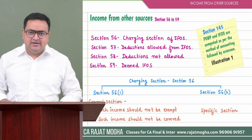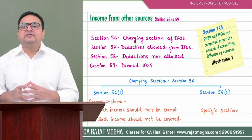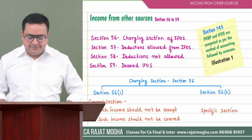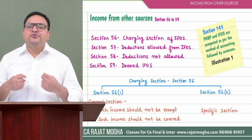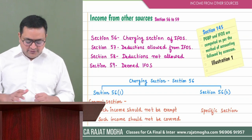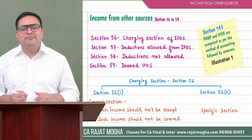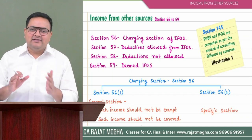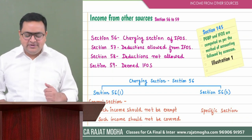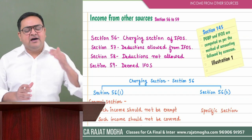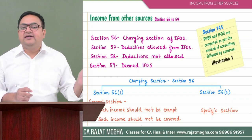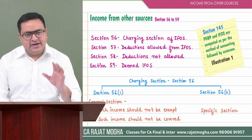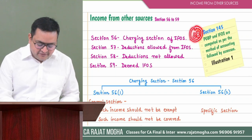Then we have Section 57, where we read what deductions are allowed under IFOS. Section 58 covers deductions not allowed. I also call this IFOS chapter a mini-PGBP, because it is somewhat related to PGBP. In PGBP, sections run from 28 to 44, where Section 28 is the charging section. Similarly, here we have Section 56.